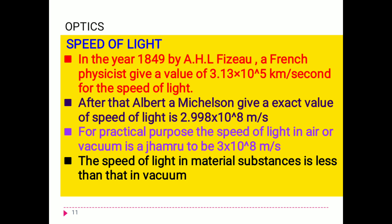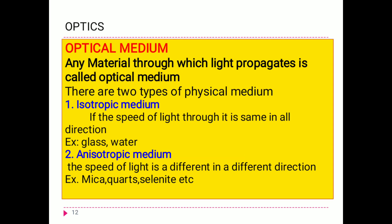The speed of light in any medium or substance is less than that in vacuum, and the speed of light changes when it changes medium — it depends on the material or medium. If light wants to propagate from one point to another, a medium is required; that medium is called the optical medium. It may be water, sand, glass, or anything. There are two types: isotropic medium and anisotropic medium. In an isotropic medium, the speed of light is the same in all directions throughout the journey. Examples are glass and water.